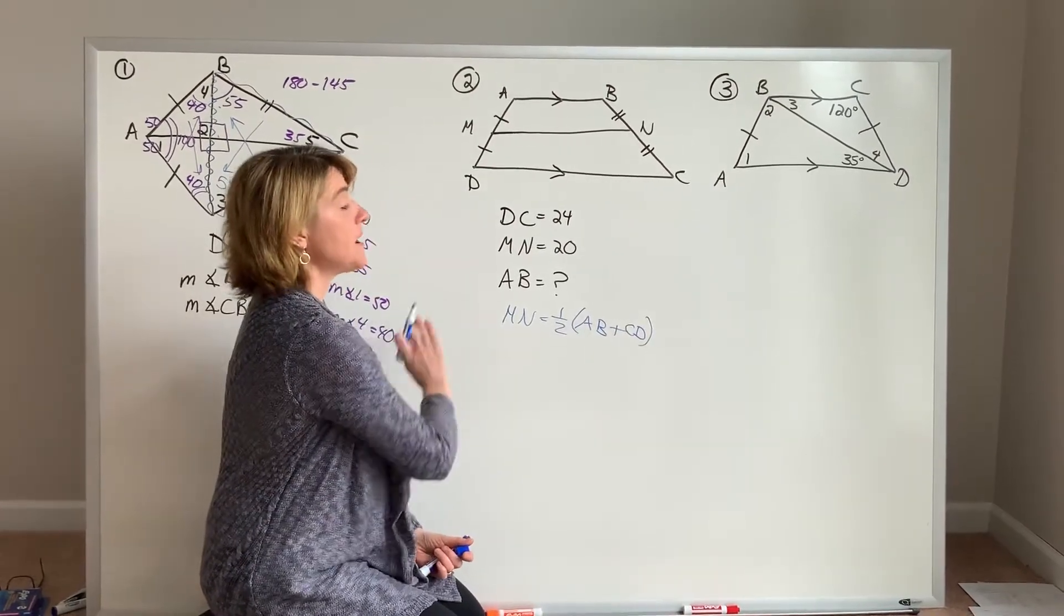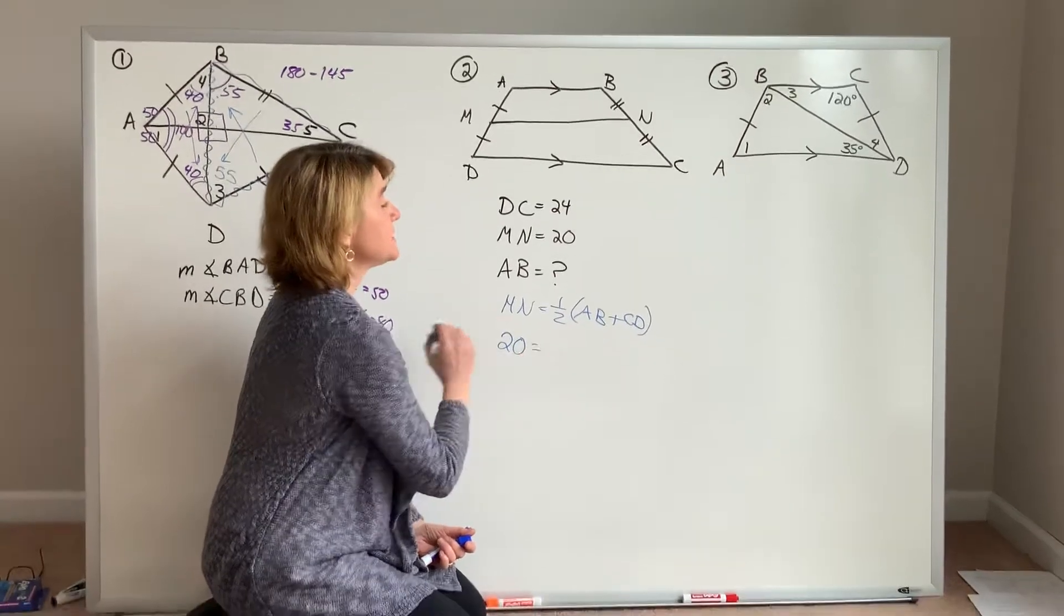So using my theorem, I can write my equation, and then using the values I'm given, 20 is equal to one-half of the sum of X and 24.